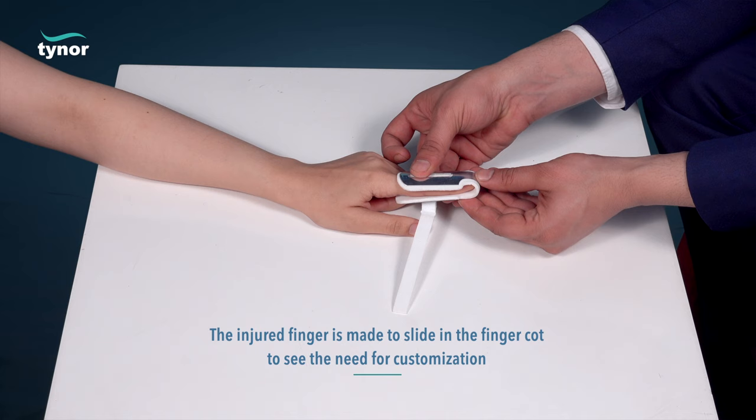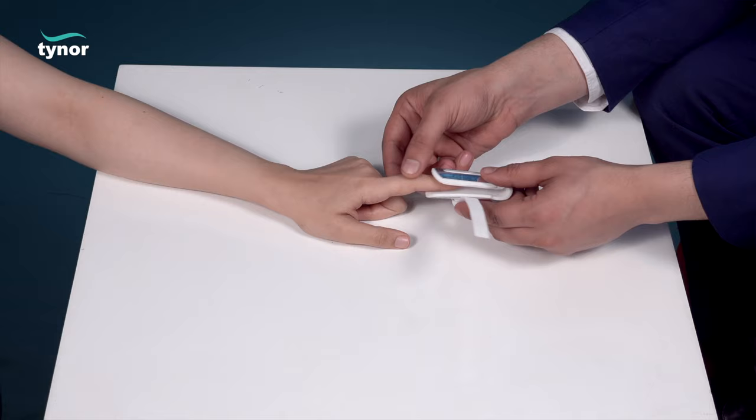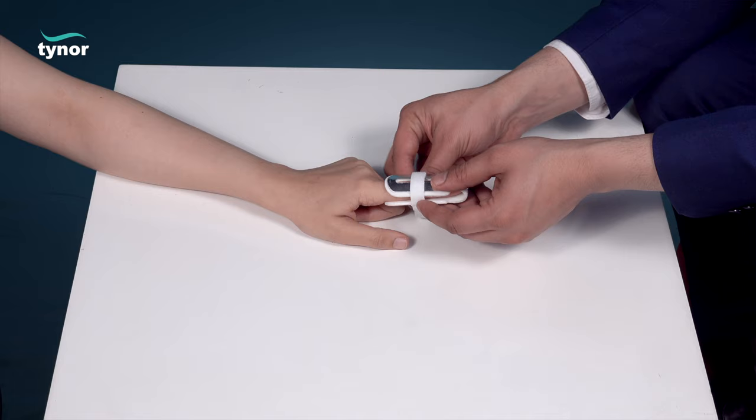To see the need for customization, the finger card is removed and then cut or bent as per the need. Then again slide the injured finger into the finger card. Now fasten the tape into a comfortable tight position.